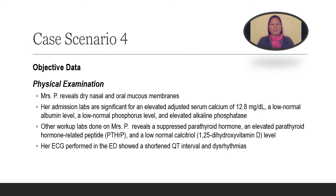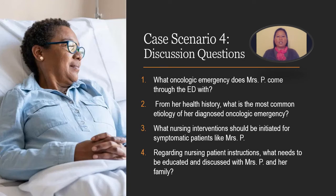Upon Mrs. P's physical examination, she reveals dry nasal and oral mucous membranes. Her admission labs are significant for an elevated adjusted serum calcium of 12.8, a low normal albumin level, a low normal phosphorous level, and an elevated alkaline phosphatase. Her other workup labs reveal a suppressed parathyroid hormone, an elevated parathyroid hormone-related peptide, and a low normal calcitriol level. Her ECG done in the ED showed a shortened QT interval with some dysrhythmias. Take a look at the discussion questions for case scenario number four, and now let's pause to answer them on your nursing activity worksheet for 10 to 15 minutes.